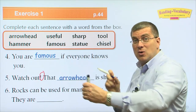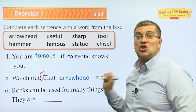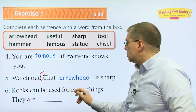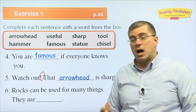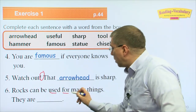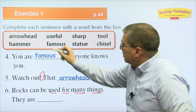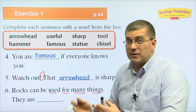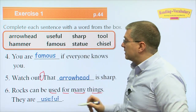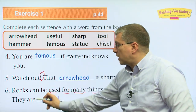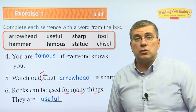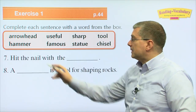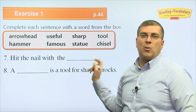Number six: rocks can be used for many things. If something can be used for many things that we want to do, we say it is useful. Rocks are useful — they can be used for many different things.